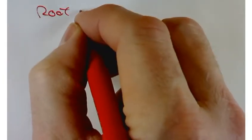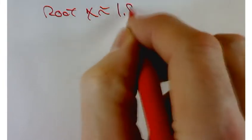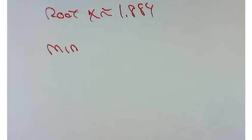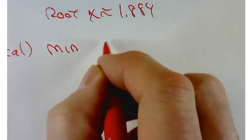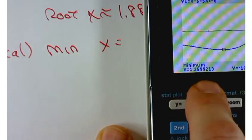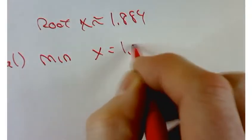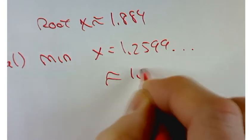So, we've got a root at x is about 1.884. And a minimum, I should say a local minimum, at x is about 1.2599. About 1.26. So, approximately 1.26.